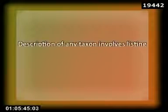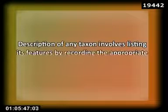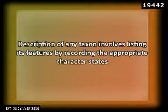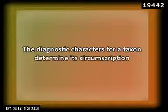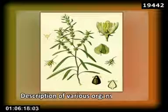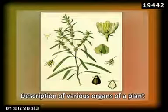1. Description: The description of any taxon involves listing its features by recording the appropriate character states. A shortened description consisting of only those taxonomic characters which help in separating a taxon from other closely related taxa forms the diagnosis, and the characters are termed diagnostic characters. The diagnostic characters for a taxon determine its circumscription. The description is recorded in a set pattern, for example: